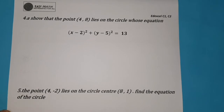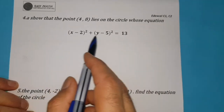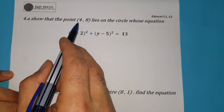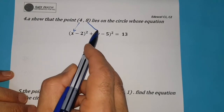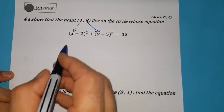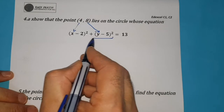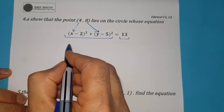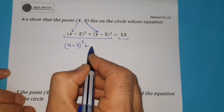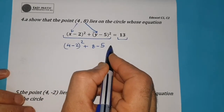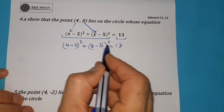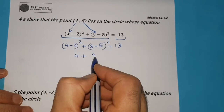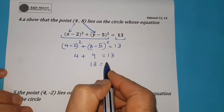Number 4: show that the point (4, 8) lies on the circle whose equation is given. To show that a point lies on the equation, just substitute x equals 4 and y equals 8. You check that both sides are equal. So (4 minus 2) squared plus (8 minus 5) squared equals 13: 2 squared is 4, 3 squared is 9, and 4 plus 9 equals 13. Yes, 13 equals 13 — it's true. So the point (4, 8) lies on the circle.